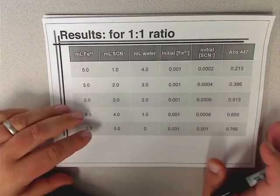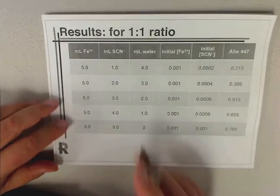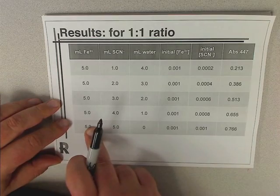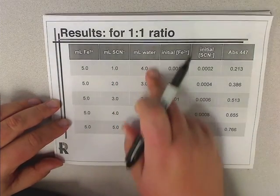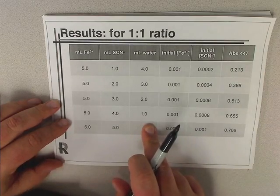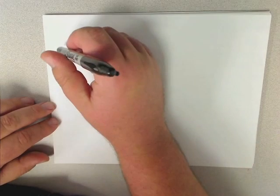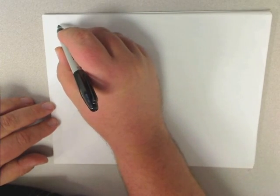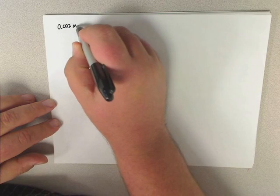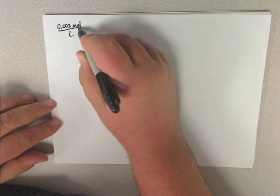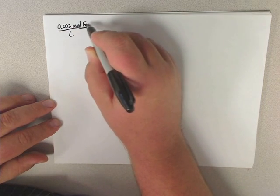So then you should have the ones that were not standard, so you have your other data. You'll have the milliliters of iron solution that you added, the milliliters of thiocyanate, and then the milliliters of water that you added. Now to calculate the concentration, we know that if we have 0.002 molar moles per liter of the iron stock.